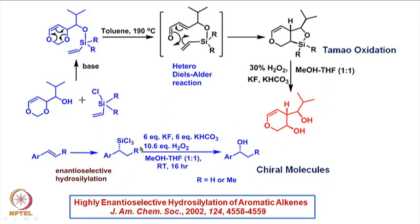If one takes a chiral, optically pure substrate of this particular type, under Tamao oxidation conditions one can convert this into the corresponding optically pure alcohol, because the starting material is optically pure. This particular starting material can be prepared from an aromatic alkene by enantioselective hydrosilylation, a process described in that particular paper.